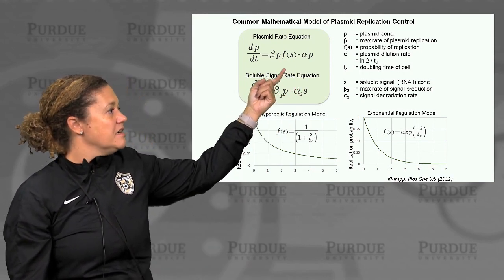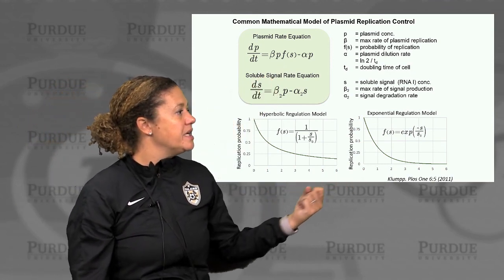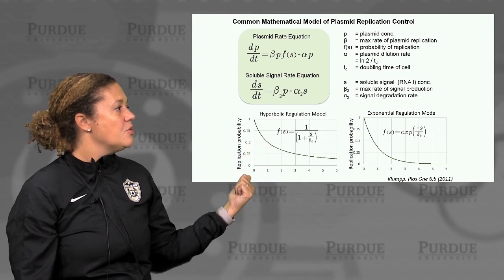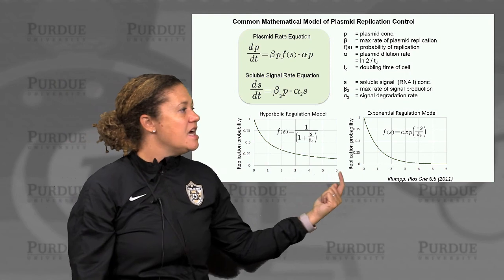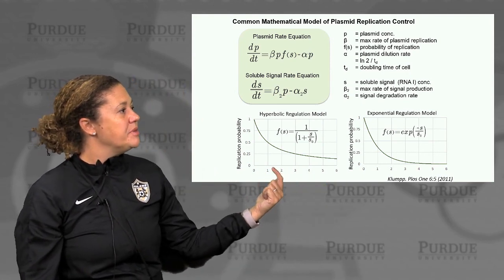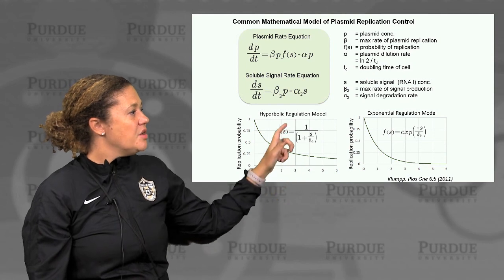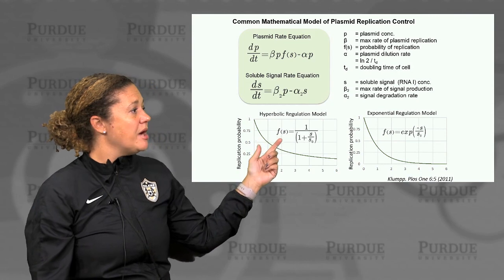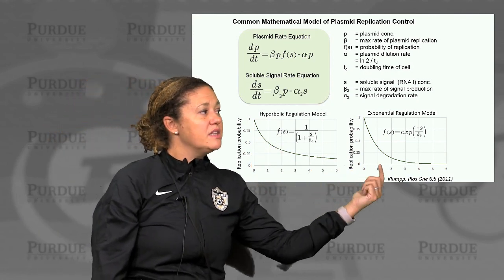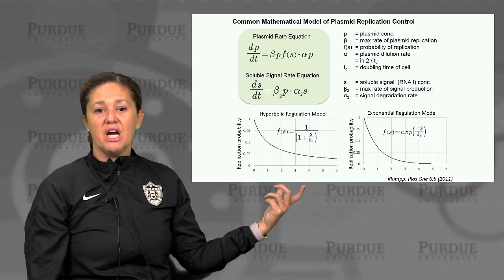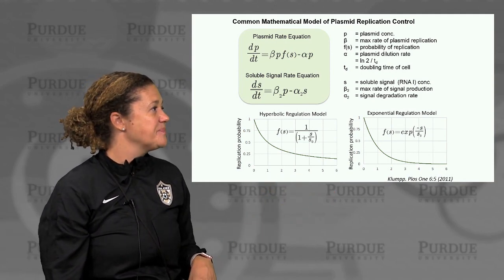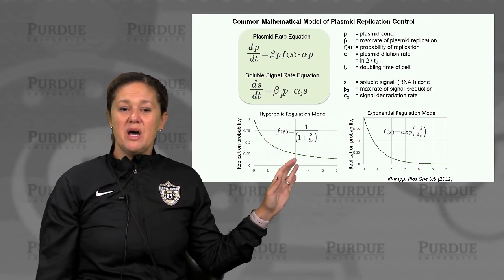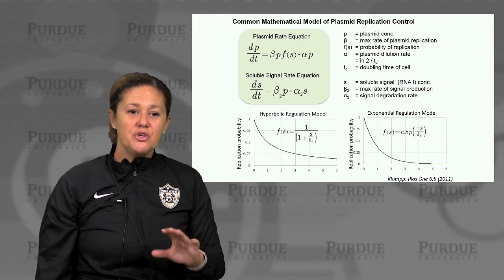In the function f(S), describing replication probability as a function of signal level S — normalized here as S/S0 — there are two models to examine: a hyperbolic regulation model and an exponential regulation model. We can compare how these two functions match what we observe in the natural system. This model is briefly described here, and its full analysis is saved as a homework problem.